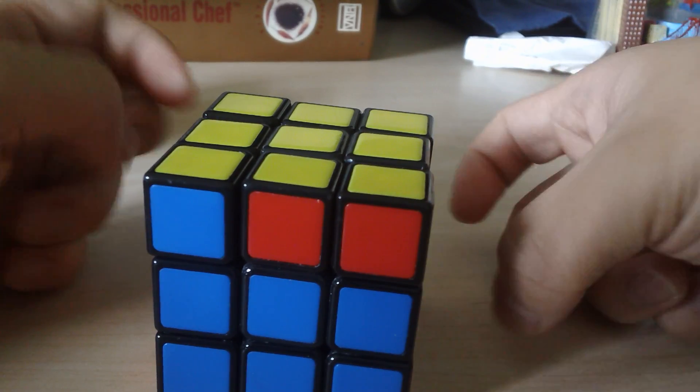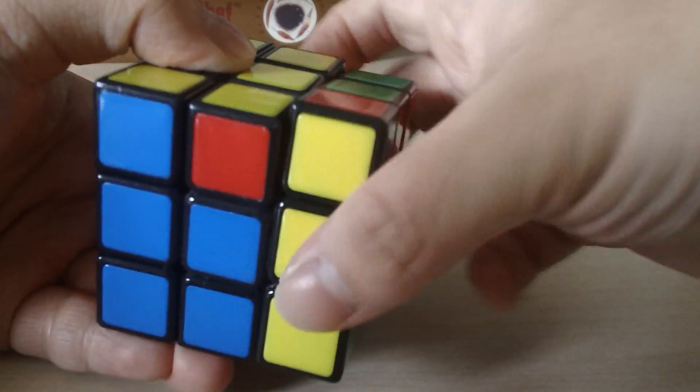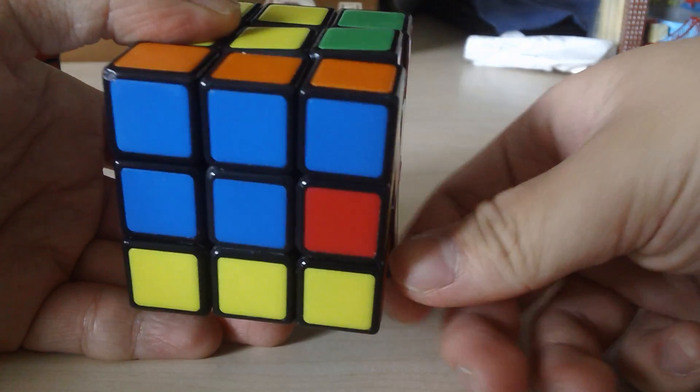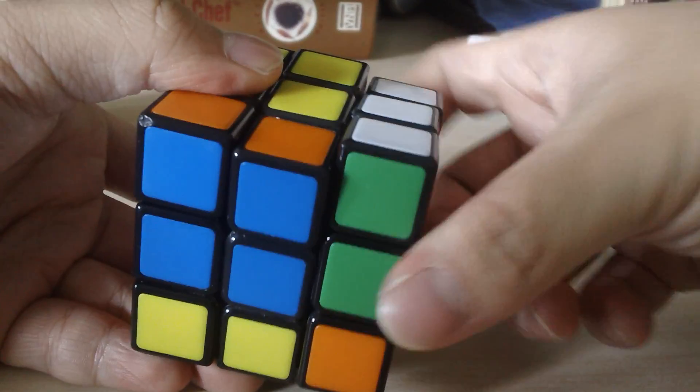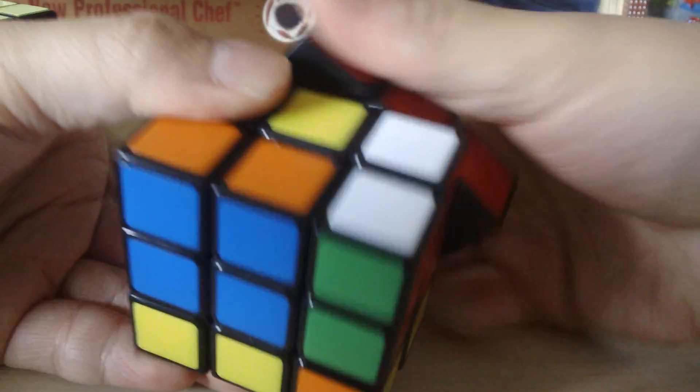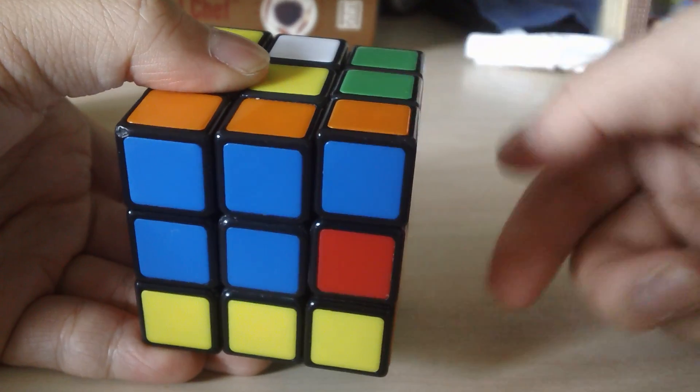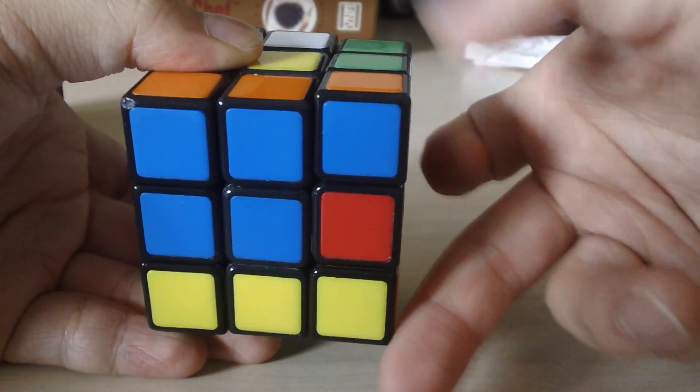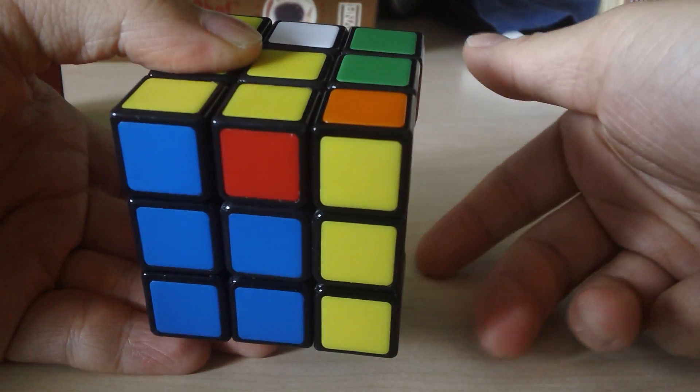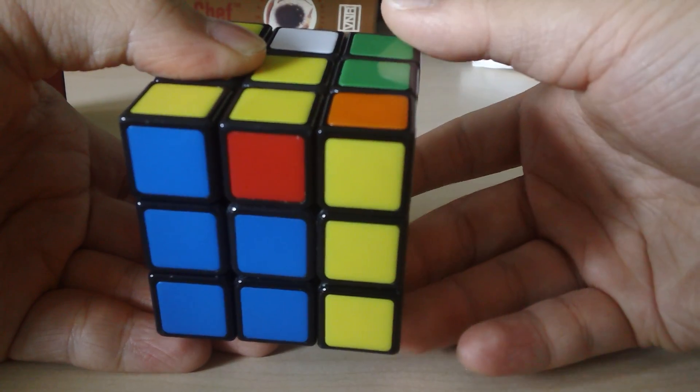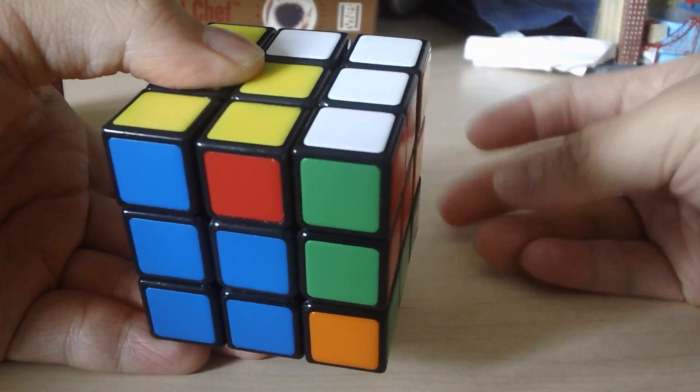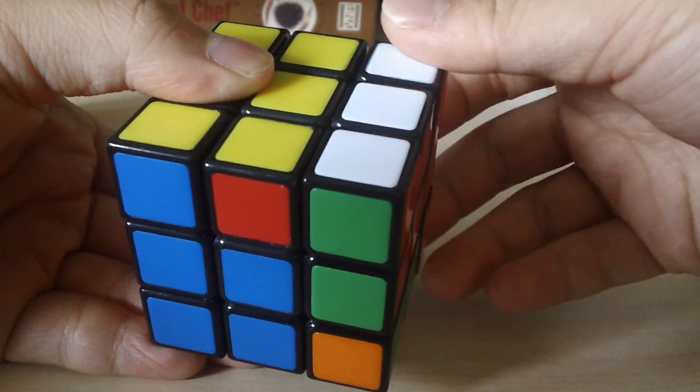And the front face you do clockwise the first time and counterclockwise the second time. I'll show you what I mean. So right, that's the first one. Front, that's clockwise. Right, that's the second one. Back twice. Now the third right you turn away from you. The second front you turn the other way. And then the fourth right is back to the same direction as before. Back twice, right twice.